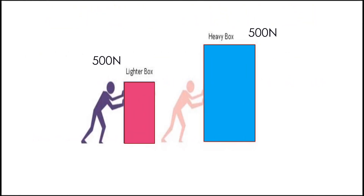For example, there are two boxes — the left one is lighter and the right one is heavier. For both boxes I'll apply 500 newtons. The left box may move a greater distance, and the right box may just slightly change its motion, because in the left case the mass is less, so the force acts more effectively.